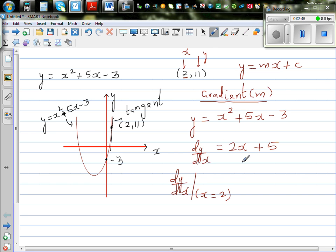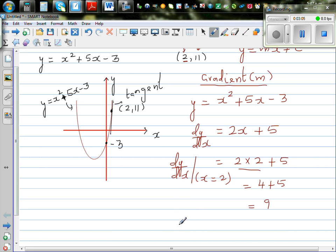We know the derivative function is in terms of x, so in place of x I can put 2. So this is 2 times 2 plus 5, which is 4 plus 5 which is 9. In other words, we can say that dy by dx at x equals 2 is equal to 9.